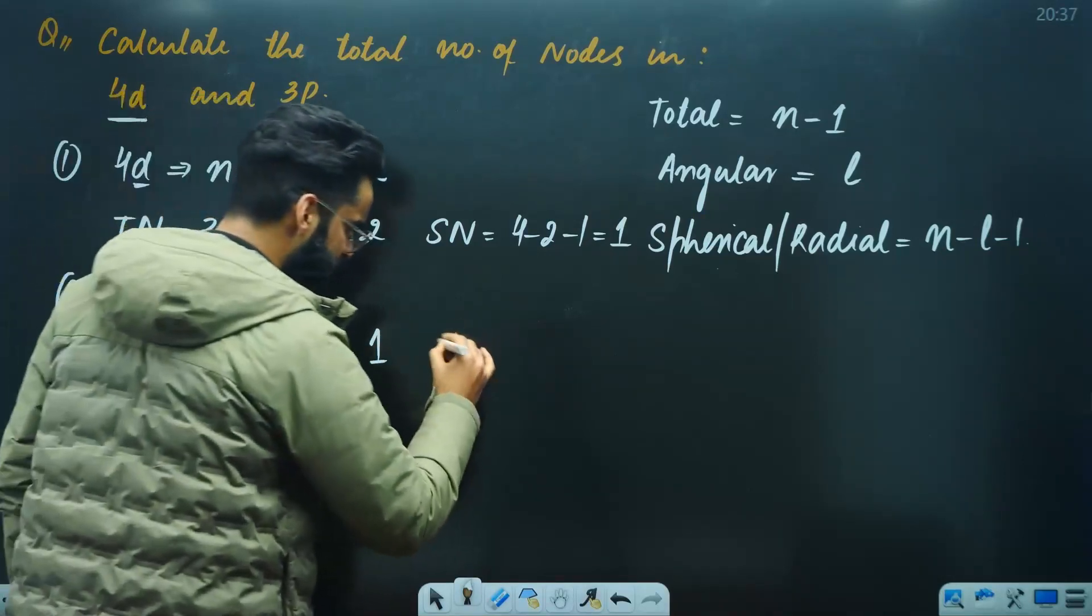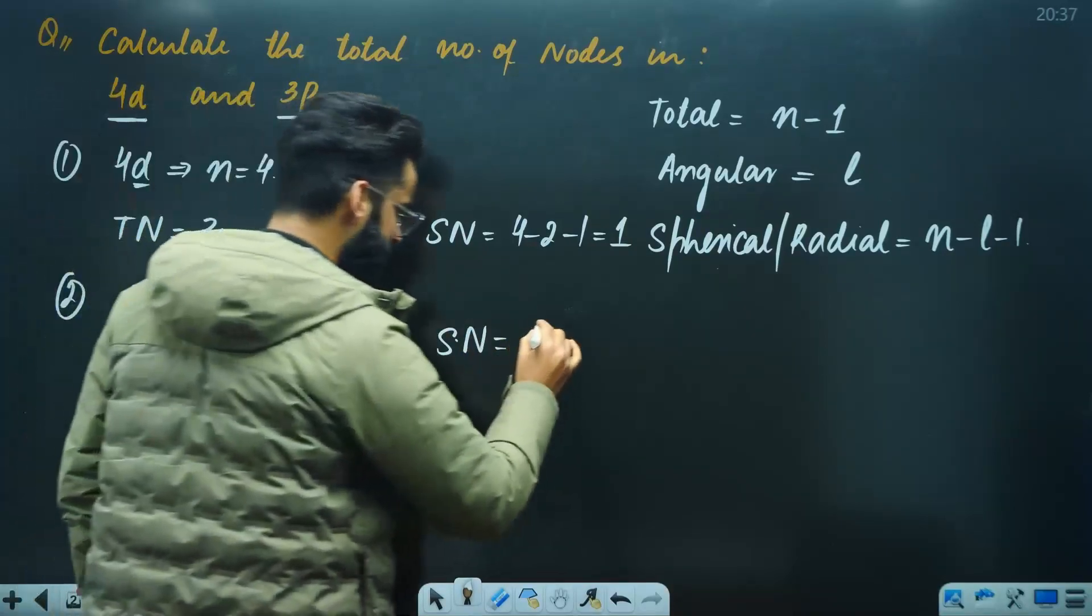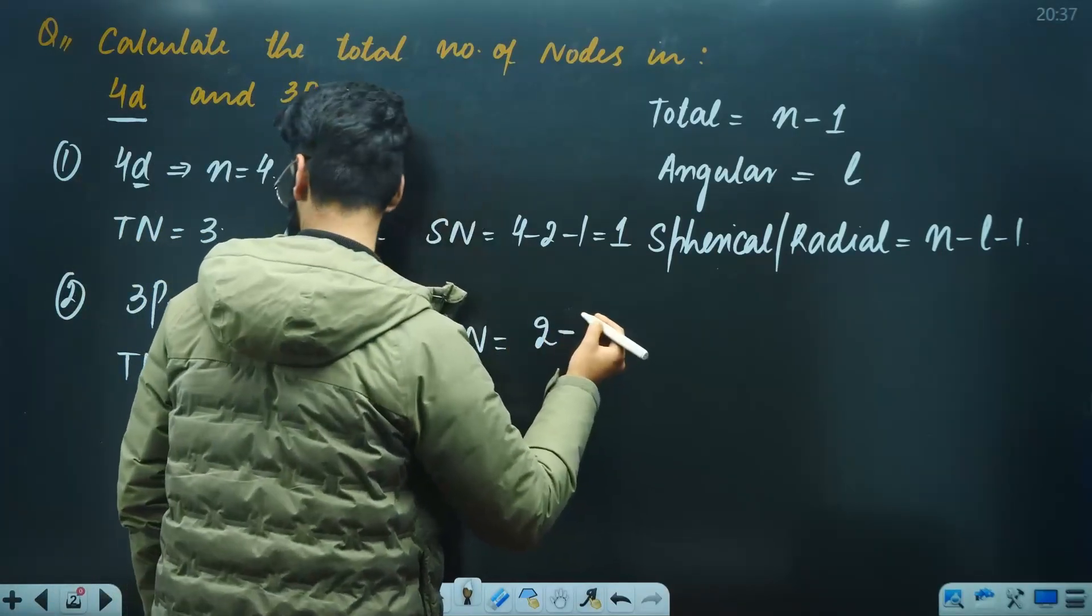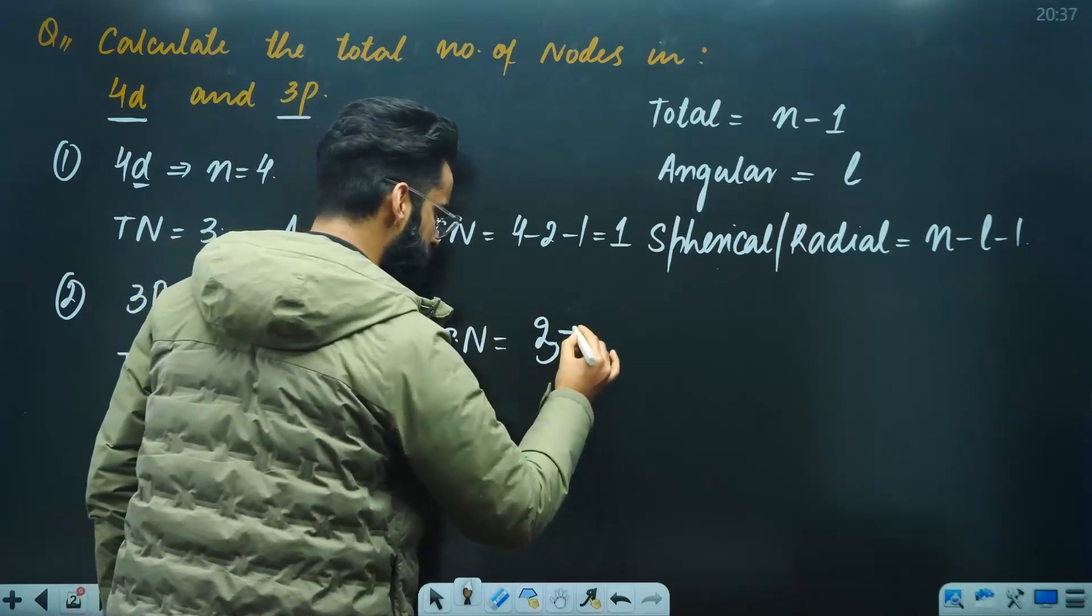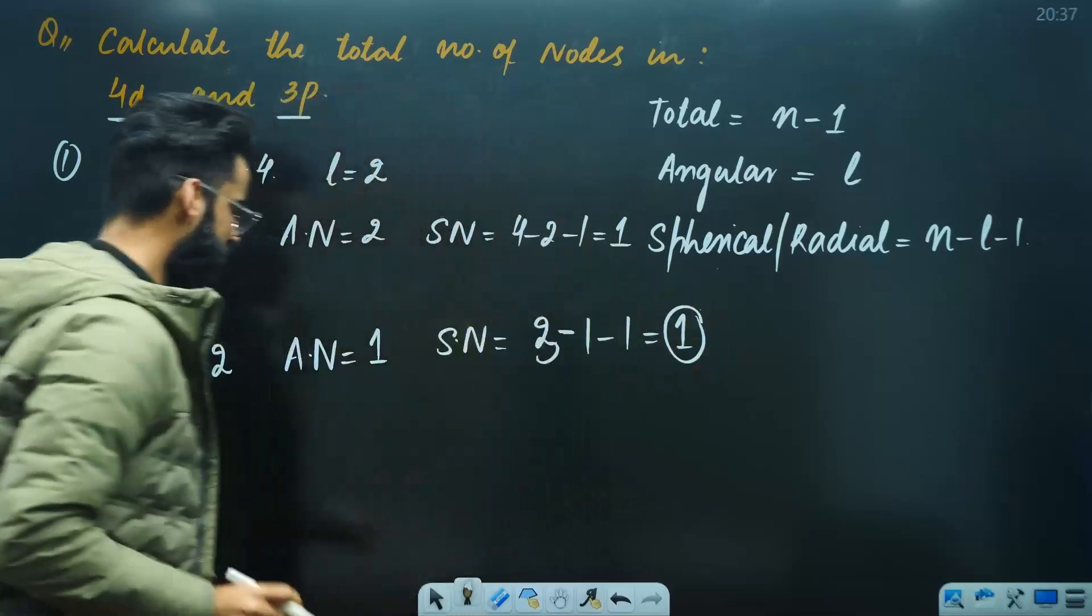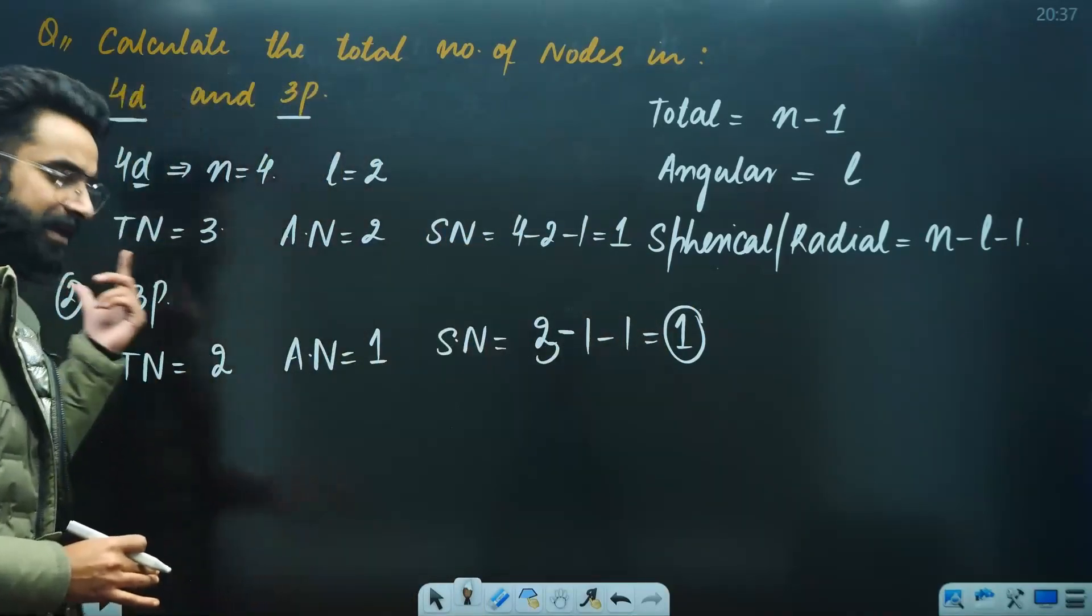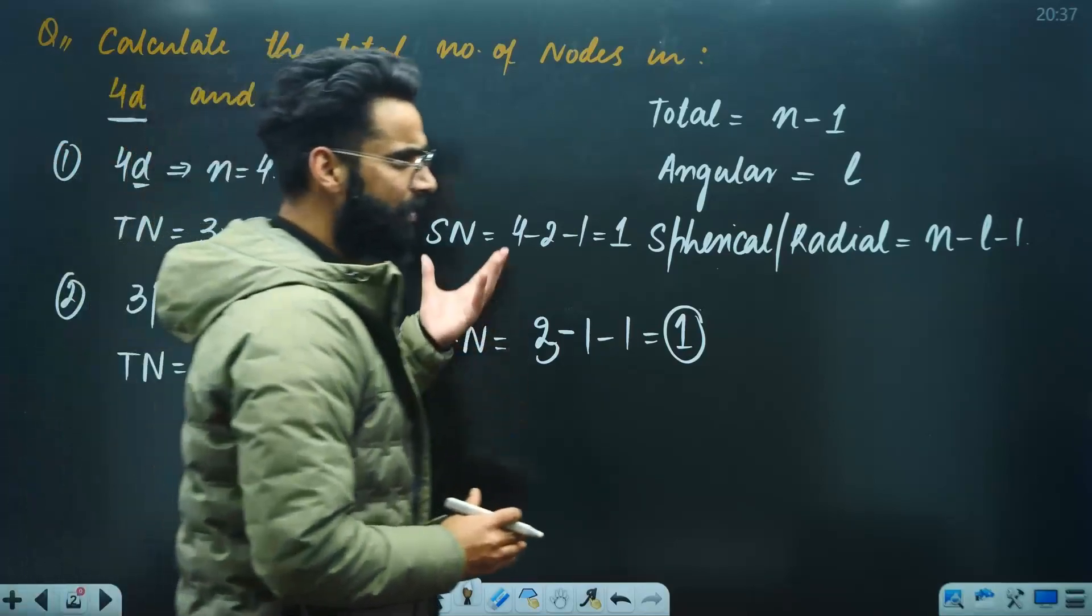If you ask spherical nodes, then n minus L minus 1. N value is 3, minus L value 1, minus 1. So the value will be 1. You can check here. Angular nodes plus spherical nodes - what will you get? Total number of nodes.